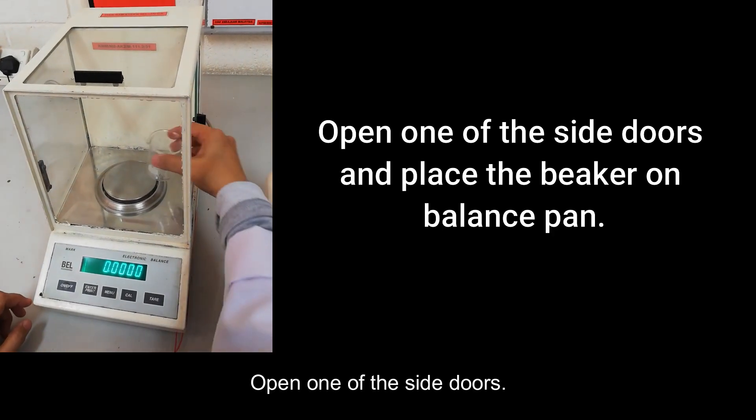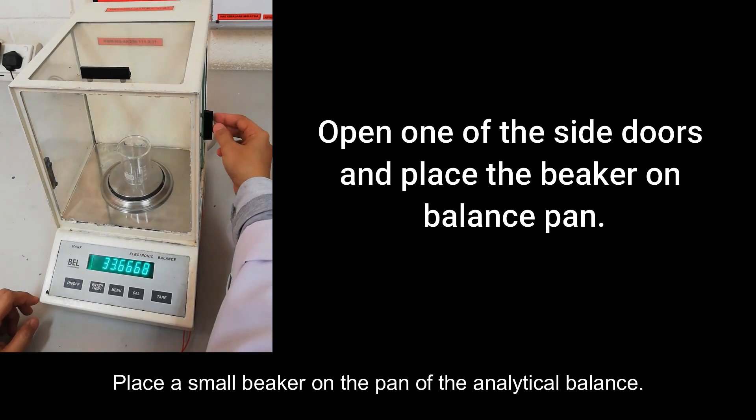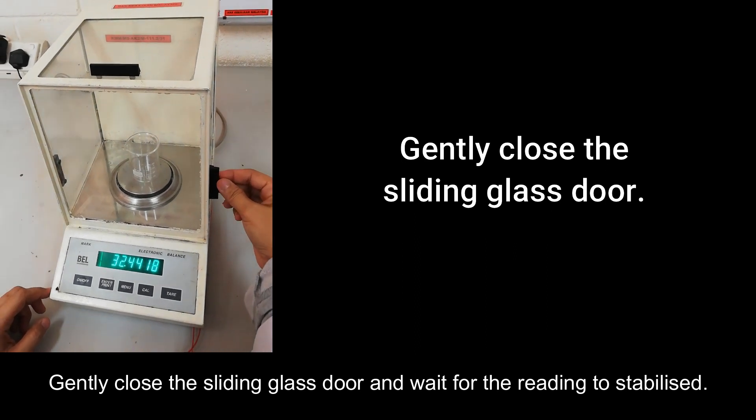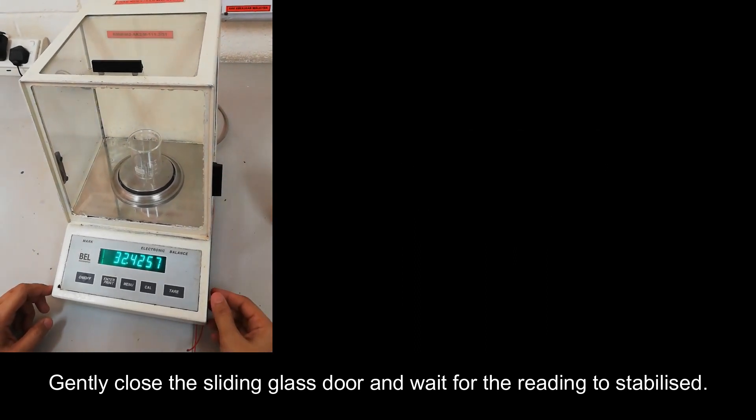Open one of the side doors. Place a small beaker on the pan of the analytical balance. Gently close the sliding glass door and wait for the reading to stabilize.